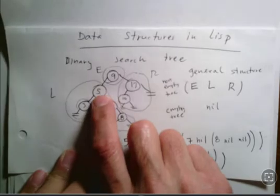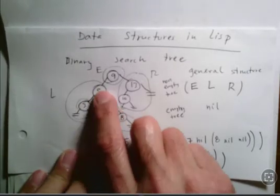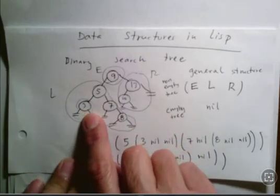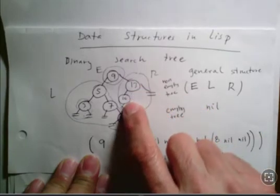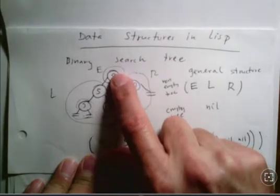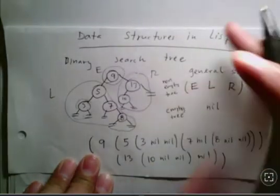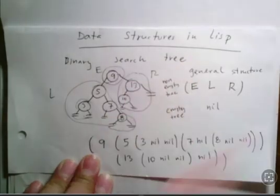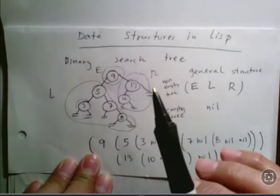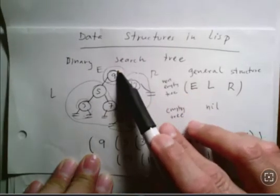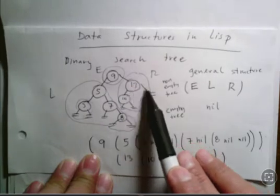Node 5 also has left and right children. The right child is greater than 5, which is 7, and to the left is less than 5, which is 3. We also have element 10, which is less than 13 but greater than 9, and 8 is greater than 7. This is a data structure you study in data structures and algorithms. For example, if we want to insert 20, we start at the root and check: is 20 greater or less than 9? It's greater, so we go right, then greater than 13, and since there is nil there, that is where we insert it.